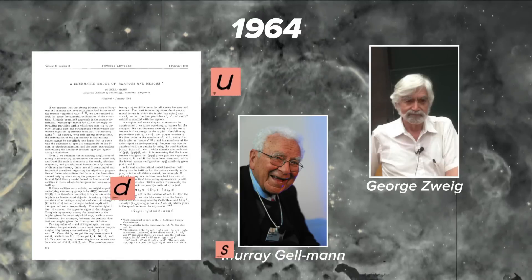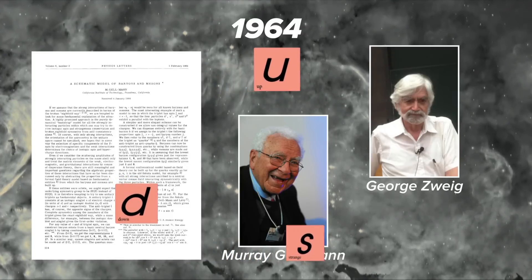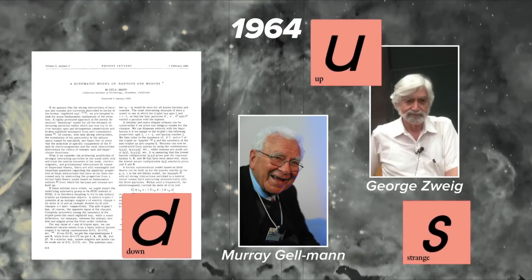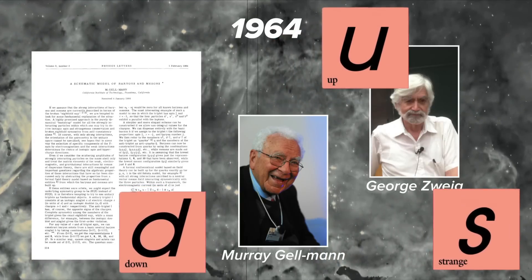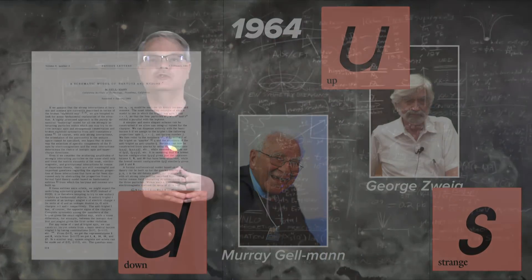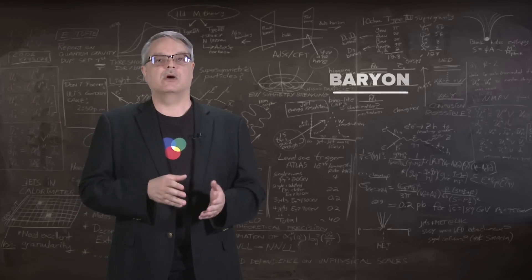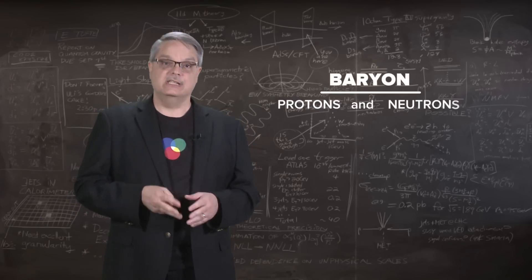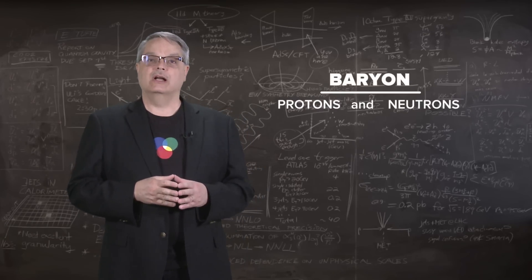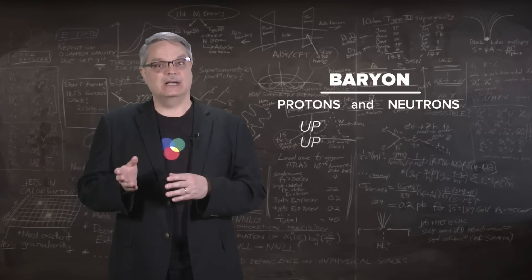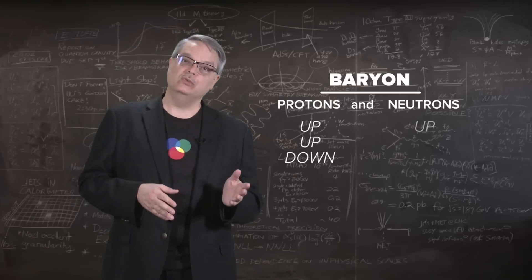Each quark was a fermion, which means that they carried subatomic spin and that there were only two kinds of spin, plus a half and minus a half. Protons and neutrons, which are examples of a class of particles called baryons, each contain three quarks. Protons contain two up quarks and a down quark, while neutrons contain two downs and an up.